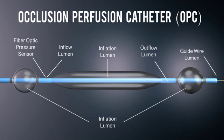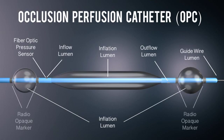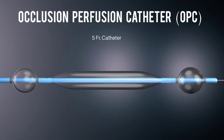A fiber optic pressure sensor is incorporated into the inflow lumen to monitor pressure within the treatment chamber. Radiopaque markers are located on both occlusion balloons to define the treatment chamber. The OPC is a five-french catheter compatible with a six-french sheath.